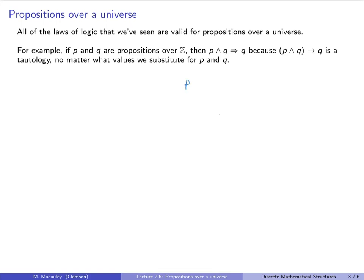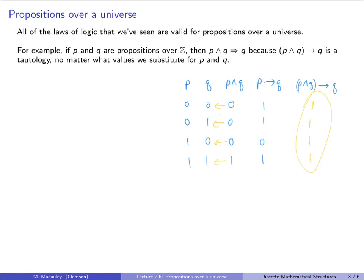Let's refresh our memory with a truth table. Writing out P, Q, P∧Q, and P→Q: the columns for P and Q take values (0,0), (0,1), (1,0), (1,1). P∧Q is 0, 0, 0, 1. P→Q is 1, 1, 0, 1. For (P∧Q)→Q: we get 0→0=1, 0→1=1, 0→1=1, 1→1=1. So the last column is all ones — that is a tautology, and that's why this is logically and mathematically true.